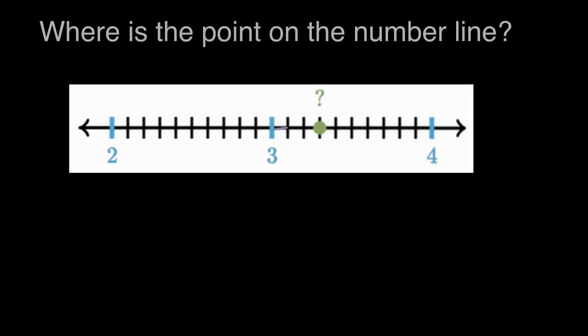So each of these distances, each of these equal spaces is one-tenth of the distance between three and four. It's one out of 10 equal spaces. So if that's one-tenth, then this next space is another one-tenth, and then we have to travel one more tenth to get to our point.